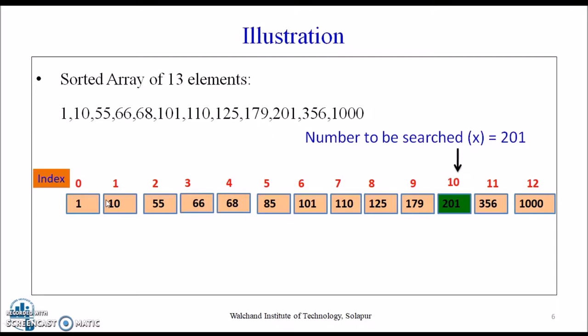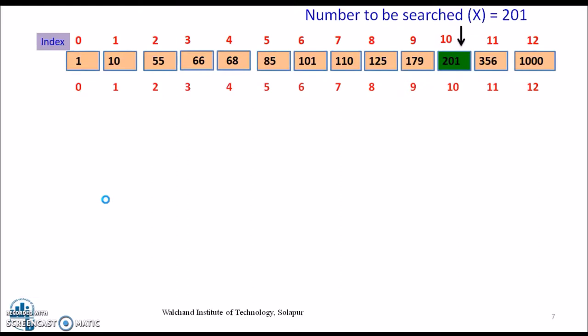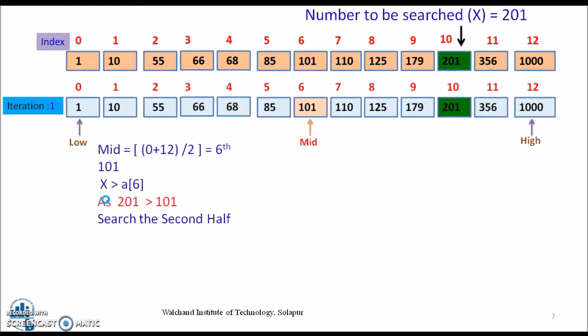To find 201, there will be many iterations, each with the steps mentioned in the figure. Iteration 1: low is 0 and high is 12. Select the middle element — the mid element here is 101. Since 201 is greater than 101, we divide the array into 2 halves and consider the subarray after element 101. This subarray will be taken for the second iteration.